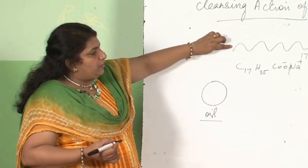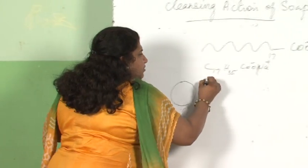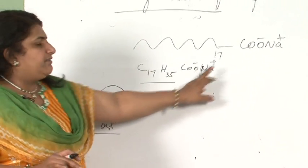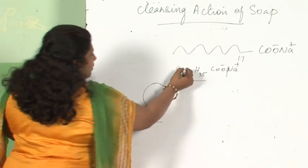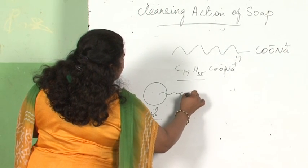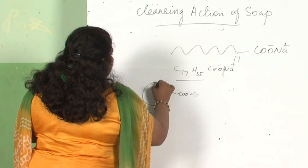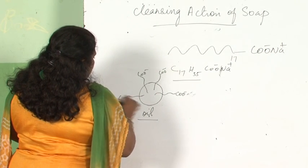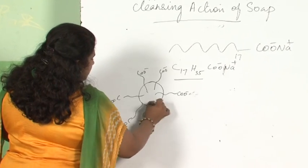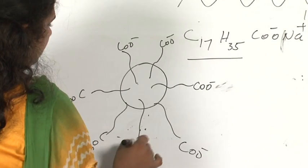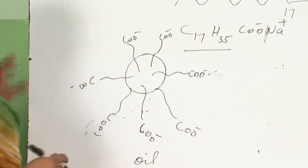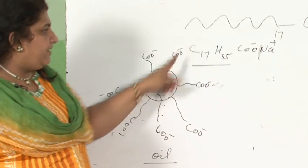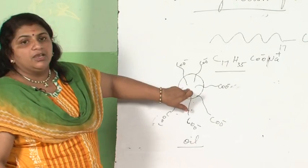This soap or detergent molecule — which part is organic? You are aware this part is organic. The principle is like dissolves like. So the organic part will dissolve inside the oil, and the ionic part will project out. The organic part of many molecules dissolves in oil; this is COO⁻ Na⁺, which will ionize to COO⁻. A micelle is formed — many soap molecules have dissolved, with the organic entity dissolved in the organic oil and grease.